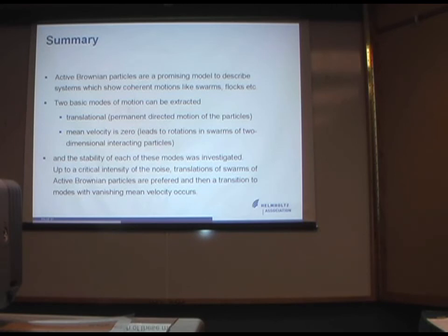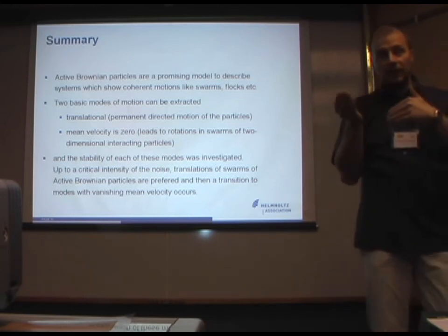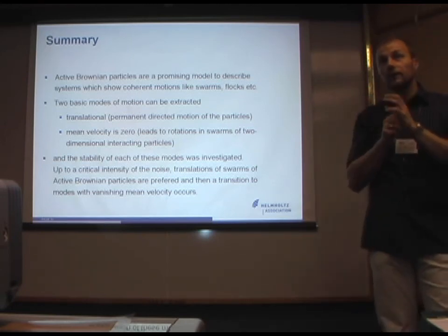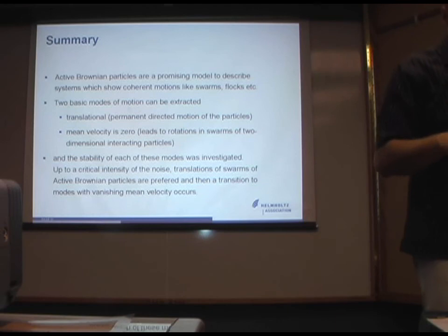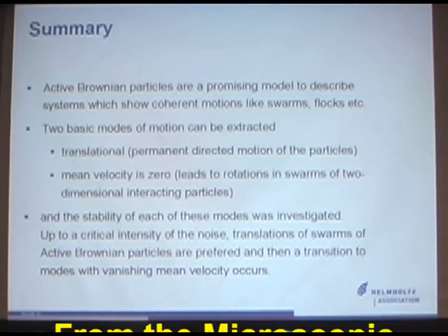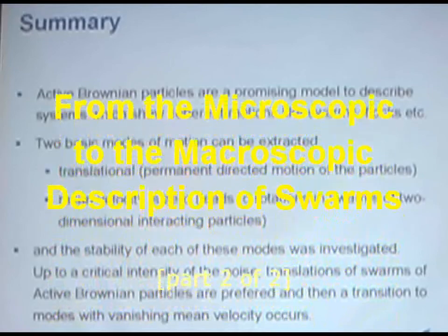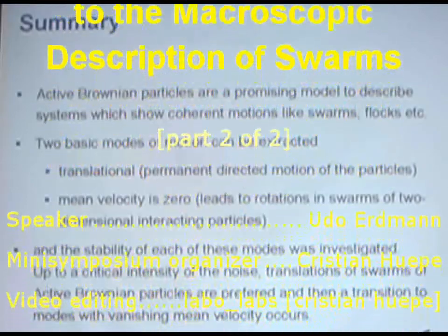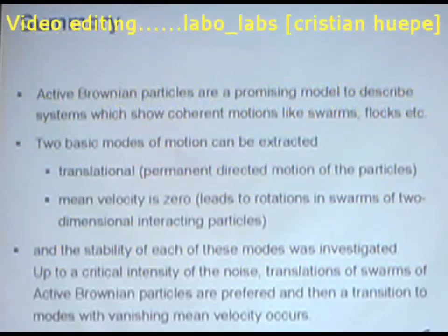Summarizing, and the next guy can build up his computer. I hope I convinced you active Brownian particles are promising model to describe the system of flocks. We have two basic modes of motion, which can be extracted. There's a translational and a mode, which has a mean velocity zero. We can explain this mode out of the transport theory, the macroscopic theory. And, the stability of each mode was investigated, so up to a critical noise intensity. We have translation, and then we have rotation, if the interaction allows. Thank you for your attention.